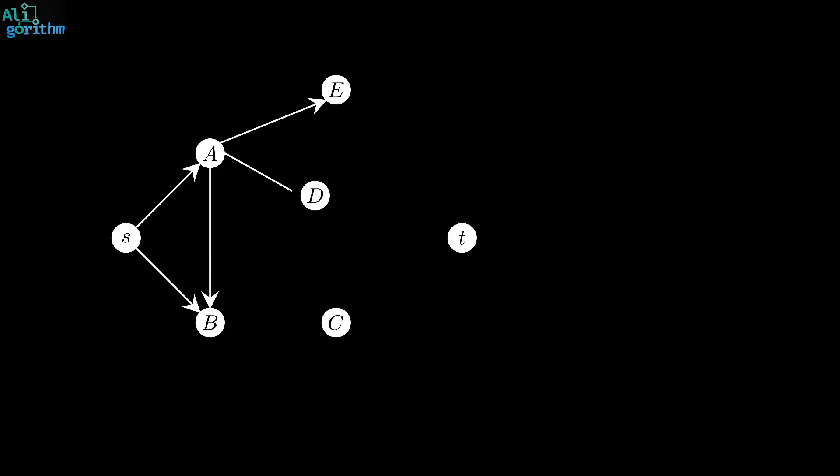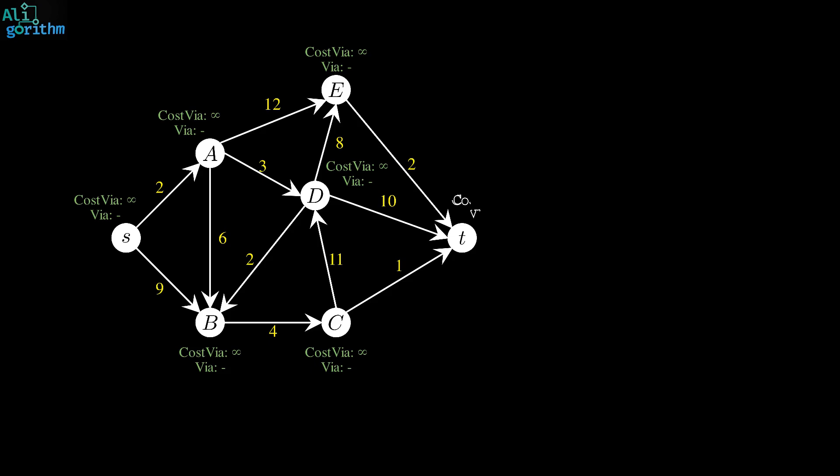Now let's see how Dijkstra's algorithm behaves on the following graph. Suppose you want to find the shortest path from S to T. First, the algorithm initializes two variables for each vertex, via and cost via. The via variable represents the vertex just before the current one on the path coming from the source, and cost via is the cost of the path to this vertex. As shown in the example, initially all vertices are initialized with infinity for cost via, indicating that no path is known yet. The exception is the source vertex S, where we know that the distance from S to itself is zero.